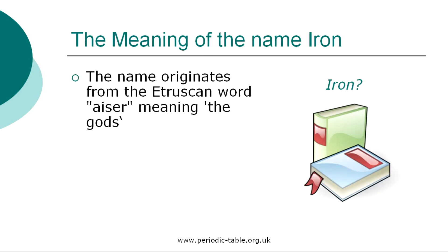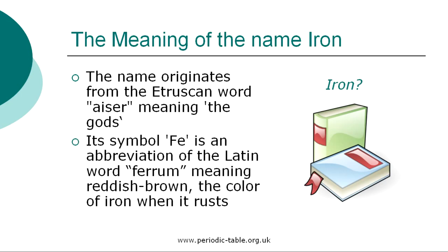The name iron is derived from the Etruscan word eiser, meaning the gods, because the earliest iron was obtained from meteorites, and meteorites fall from the sky. The Etruscans were a Mediterranean Iron Age civilization of ancient Italy, until its assimilation into the Roman Republic in the first century BC. The symbol for iron, Fe, originates from the Latin word ferrum, meaning reddish brown, in reference to its color.